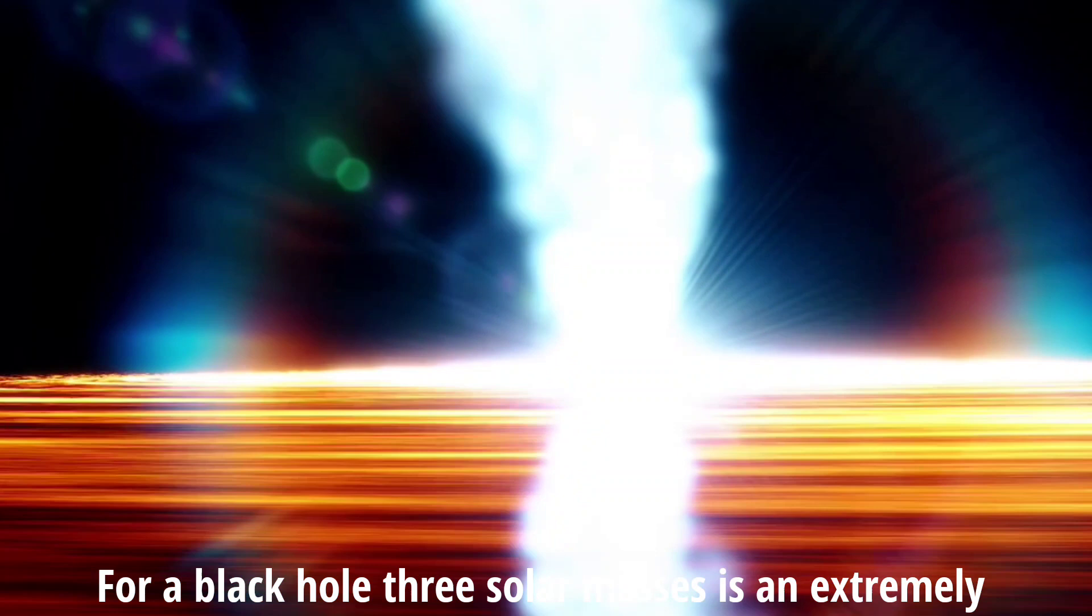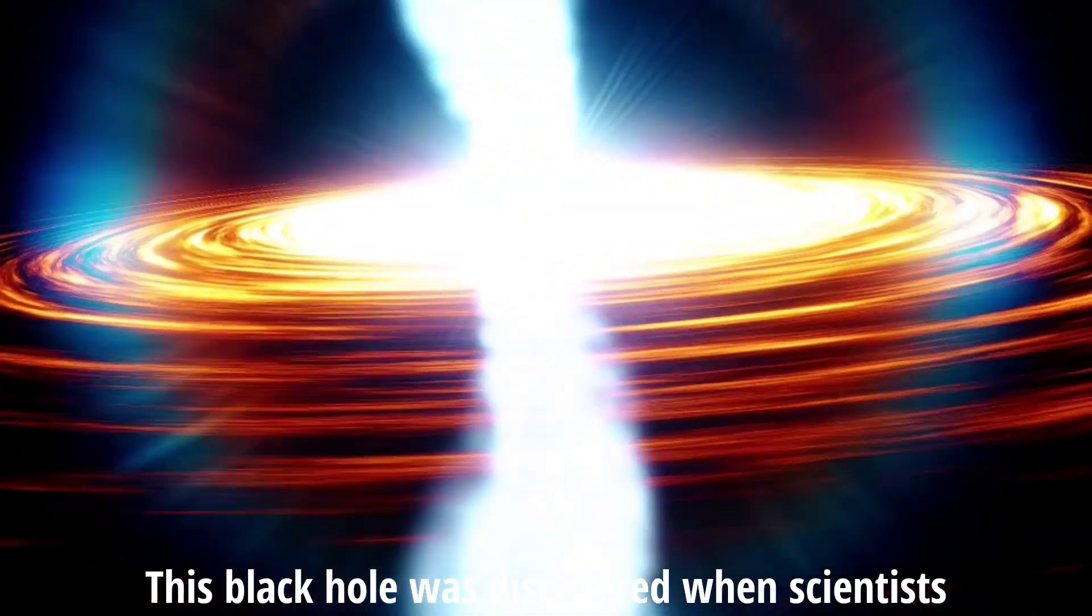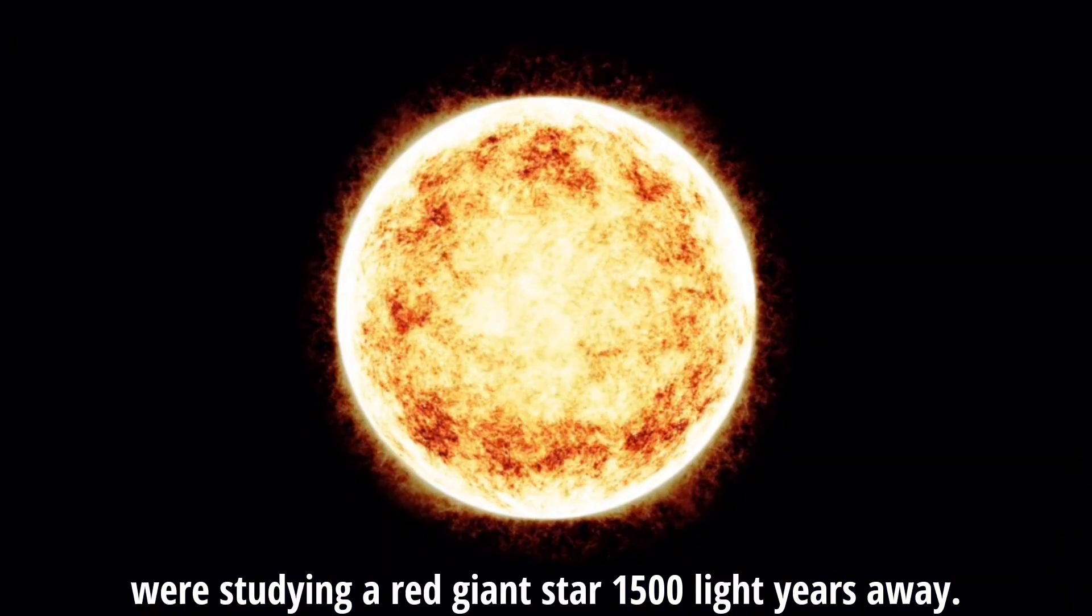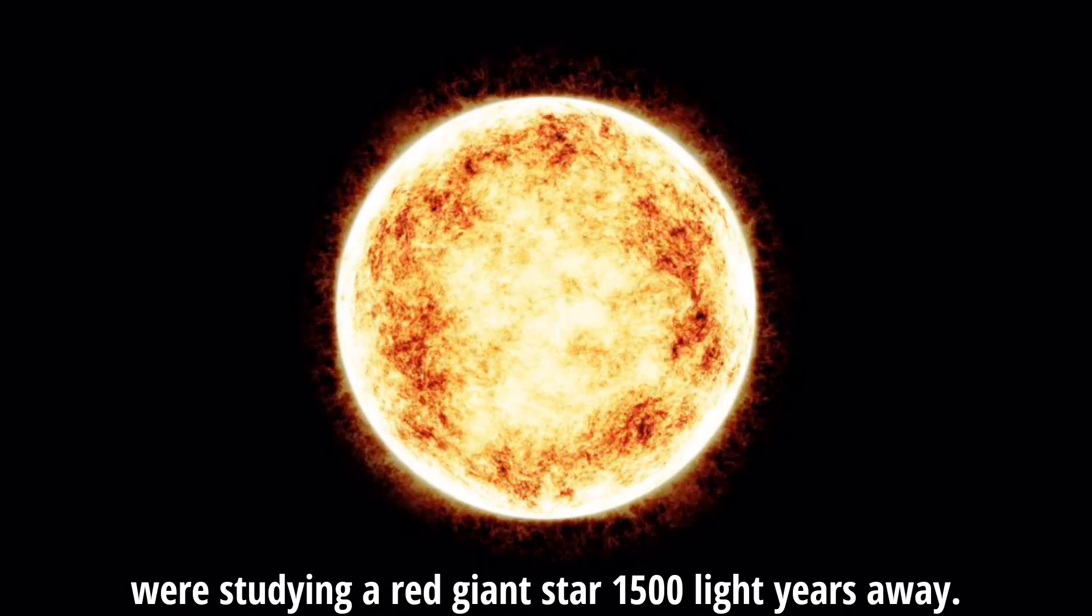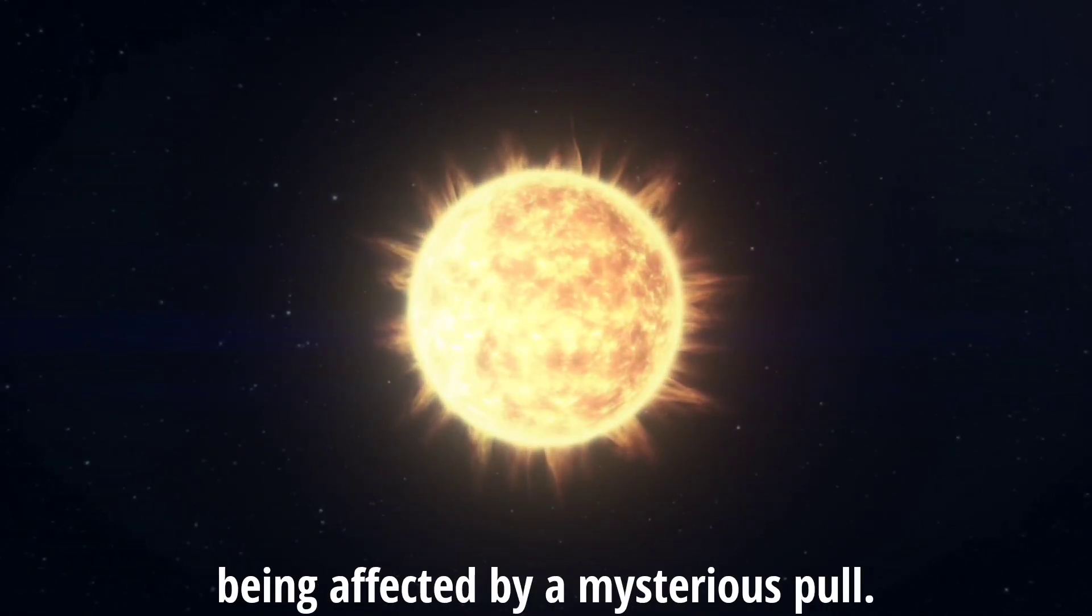For a black hole, three solar masses is an extremely small amount of mass. This black hole was discovered when scientists were studying a red giant star 1,500 light-years away. They observed that the star's motion was being affected by a mysterious pull.